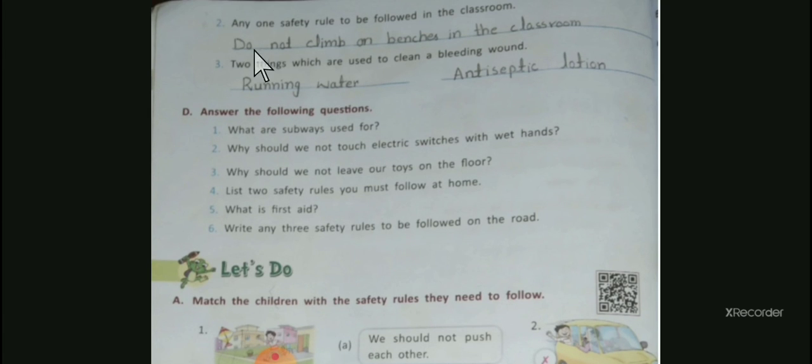Number three: Two things which are used to clean a bleeding wound. Answer is running water and antiseptic lotion.